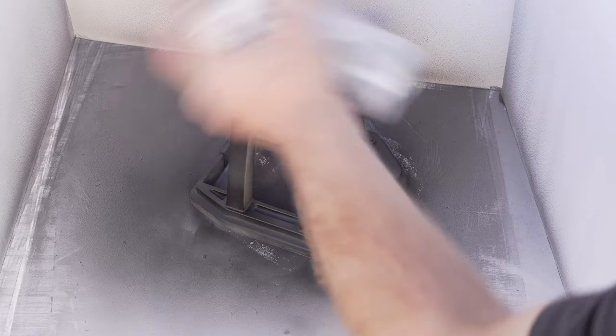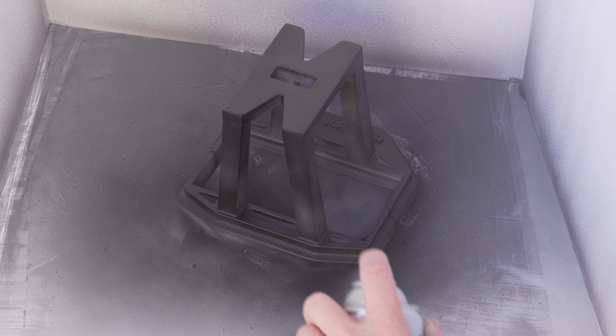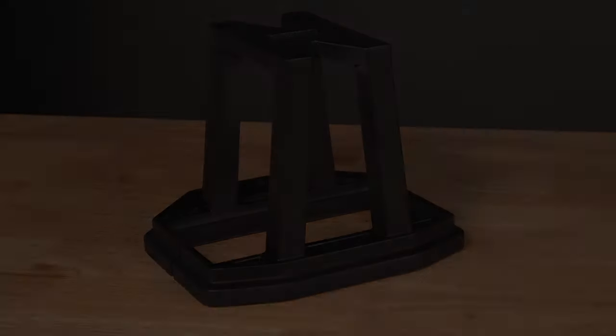Shake the paint can several times. Using the same methods as the primer, start with light, even strokes about 10 to 12 inches above the part. Coat the part evenly and let each coat dry completely before starting another. After a couple coats, inspect the part again to check for any blemishes or inconsistencies that needed to be sanded.